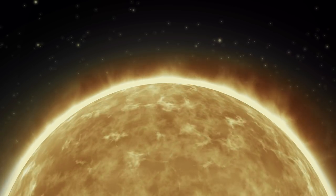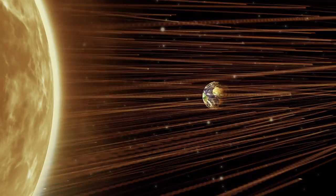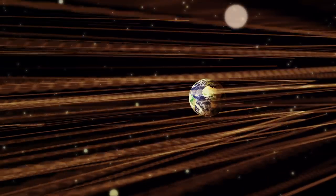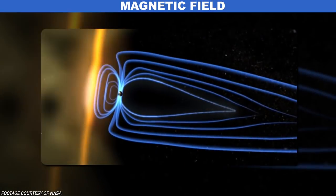Auroras start with the Sun. Specifically, when the Sun decides to shoot billions of tons of charged particles, mostly protons and electrons, at the Earth at speeds that would do some serious damage if we were not surrounded by a protective magnetic field.